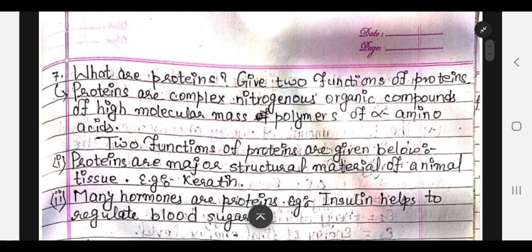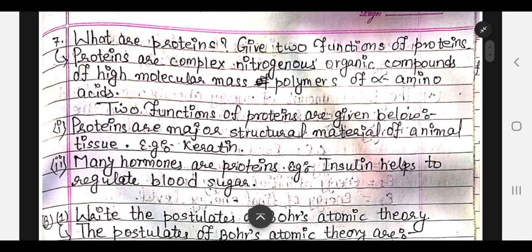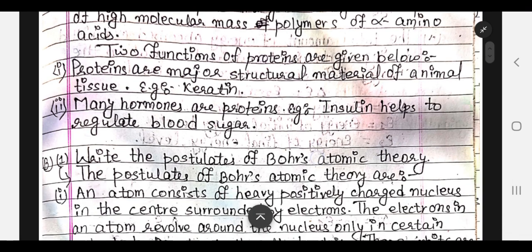What are proteins and what are their functions? This is a question from the molecules of life chapter, one of the important parts of chemistry. Proteins are complex nitrogenous organic compounds of high molecular mass — polymers of alpha amino acids. Two functions of proteins follow.